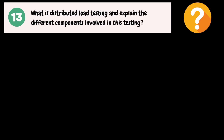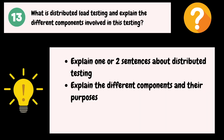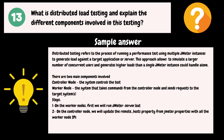What is distributed load testing and what are the different components involved? Quickly explain one or two sentences about distributed testing, then explain the different components and their purposes. Distributed testing refers to the process of running a performance test using multiple JMeter instances to generate load against a target application or server. This approach allows simulating a large number of concurrent users and generating higher loads than a single JMeter instance could handle alone. There are two main components: the Controller Node, which controls the test, and the Worker Node, which takes commands from the controller node and sends requests to the target system.